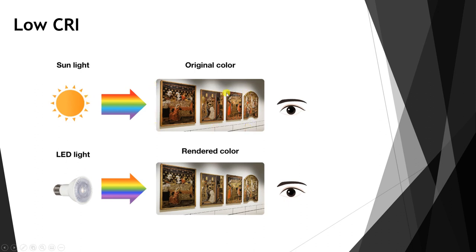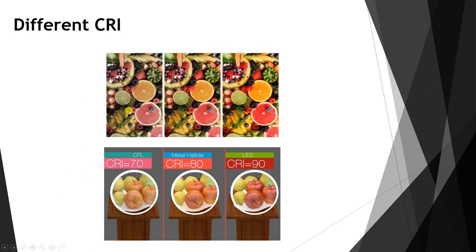Here is another comparison: two paintings side by side. Using sunlight, which has a CRI of 100, we can see the object with its own original color. However, an LED light with a lower CRI compared to sunlight gives us a rendered color — the painting's color is not accurate. As we move toward higher CRI values, we see the real colors of the object, while a low CRI gives poor color quality.